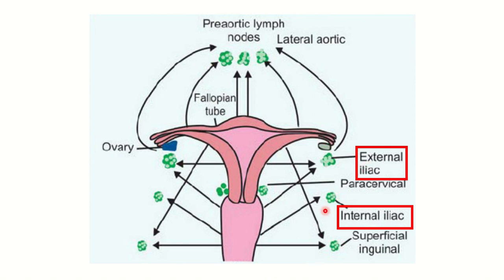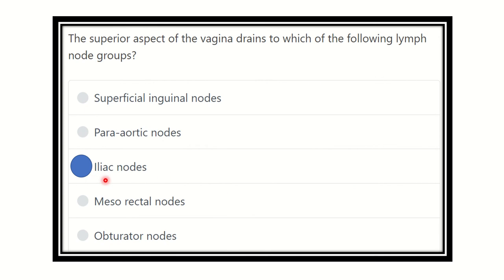From the medial area, drainage occurs into the internal iliac lymph nodes. So the superior and middle aspects of the vagina drain into the iliac group of lymph nodes. It is now clear that the inferior or lower part of the vagina has lymphatic drainage to the superficial inguinal lymph nodes, while the upper part drains into the external iliac and internal iliac group of lymph nodes — that is, the iliac group.